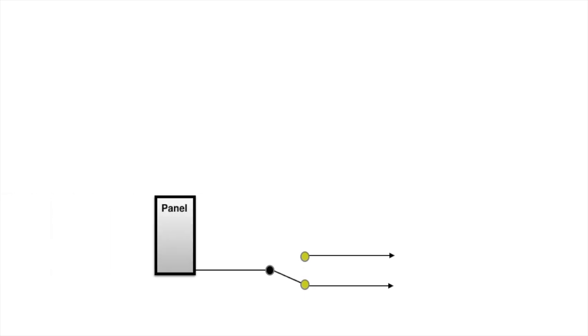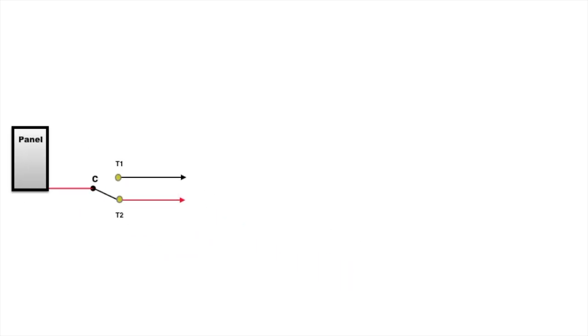The black contact is C. We call that common. And then the other two are called T1 and T2, and T stands for traveler. So as I operate the breaker, turn the thing on, you can see that traveler wire on the bottom is energized. The one on the top stays de-energized, because it's not made to the common contact. If I operate the switch, it'll just reverse the situation or the condition. Always one or the other, never both at the same time. That's what a three-way switch does.